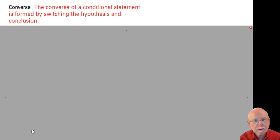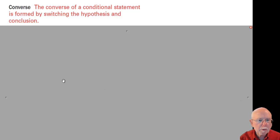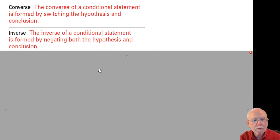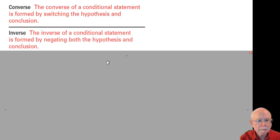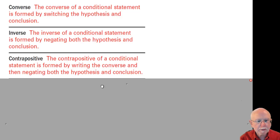The converse is where I switch the hypothesis and the conclusion — I take what's after the 'then' and move it to after the 'if,' and take what's after the 'if' and move it to after the 'then.' I need to make sure my grammar is correct, because if my conclusion has 'it' in it, I don't move the 'it' to the beginning of the sentence. The inverse is where I negate both the hypothesis and the conclusion — I either put a 'not' in each one or remove a 'not.' The contrapositive is where I do both: I switch the order and negate both.